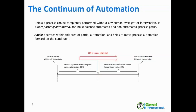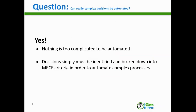When we talk about Jidoka and the continuum of automation, the entire market is trending toward more automation — taking processes wherever they fall on the continuum and moving them toward a more automated state, because that typically equates to less cost or a lower cost structure.